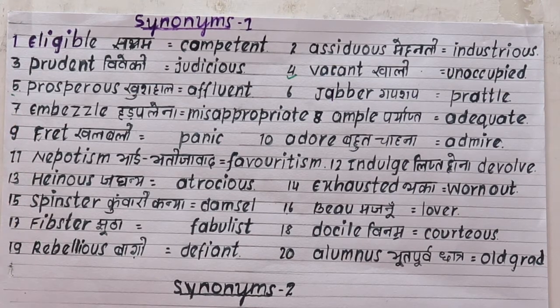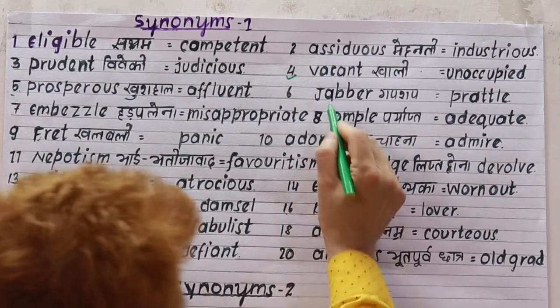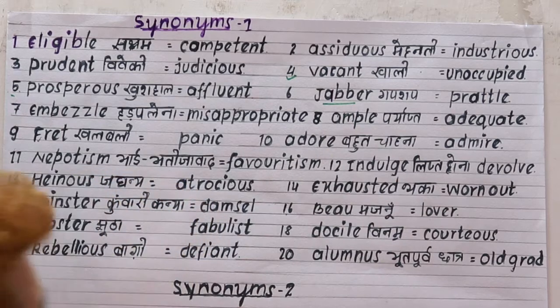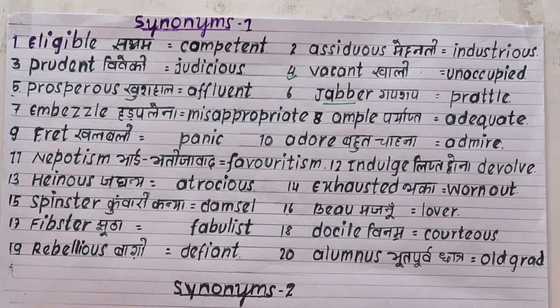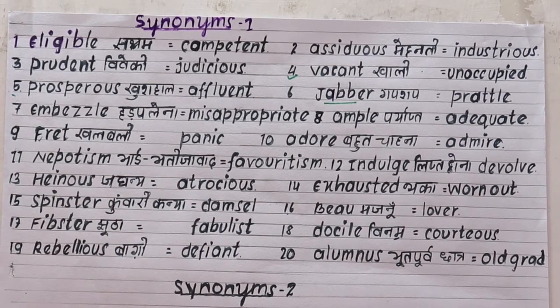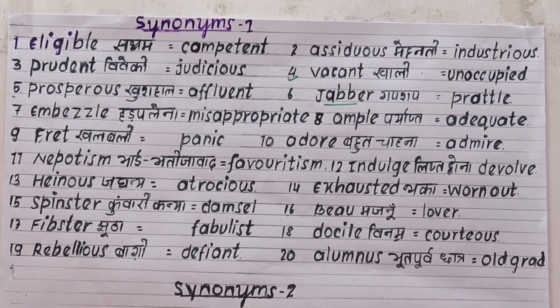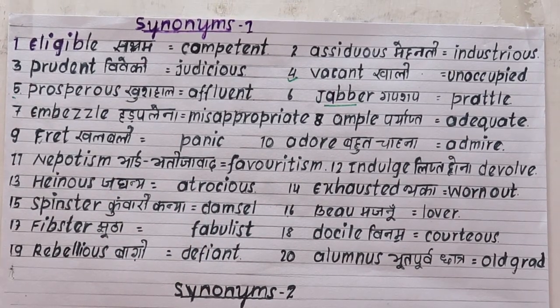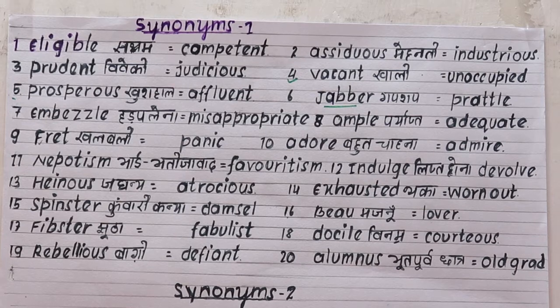Number six is 'jabber', meaning to talk a lot or chat unnecessarily. The synonym is 'prattle'. For example: don't jabber — don't prattle, meaning don't talk nonsense.